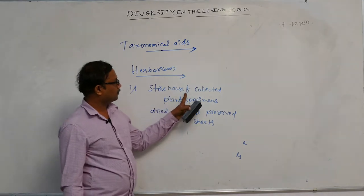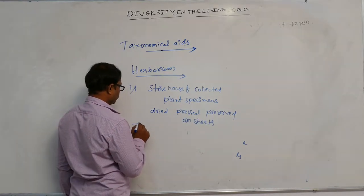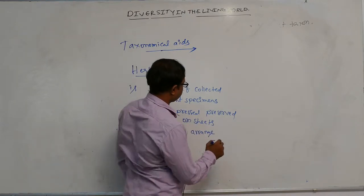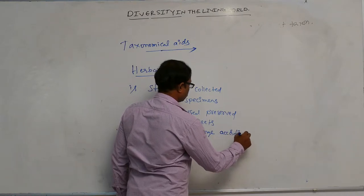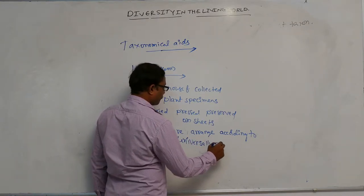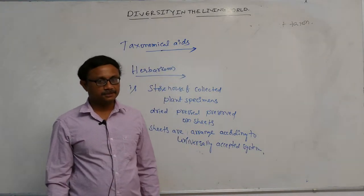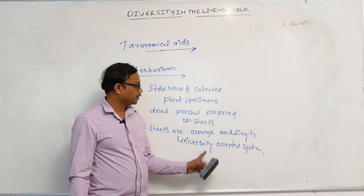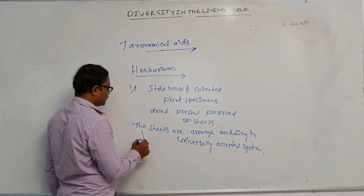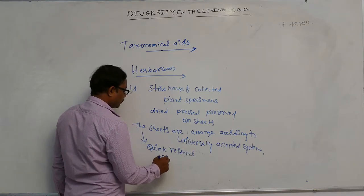Herbarium is a storehouse of collected plant specimens that are dried, pressed, and preserved on sheets. These sheets are arranged according to a universally accepted system. Herbariums and their descriptions are used as a storehouse or repository for future purpose. Herbarium sheets and descriptions act as a quick referral system for identification of plants.